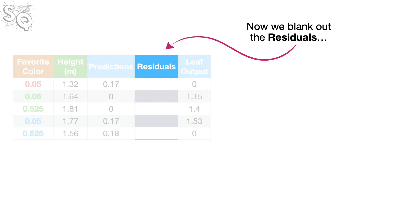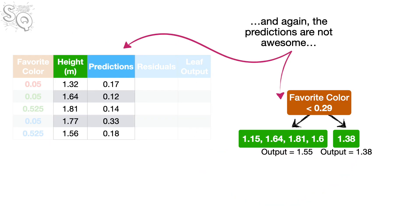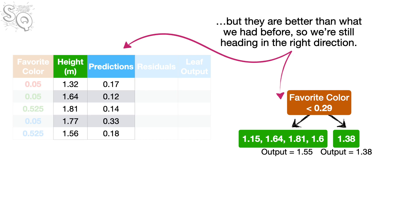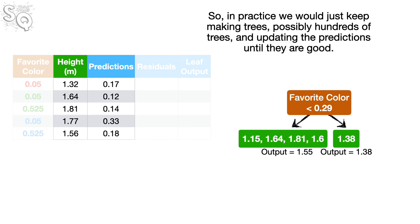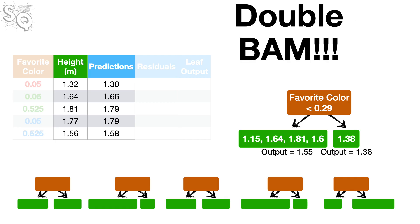Now, we blank out the residuals, and update the predictions. And again, the predictions are not awesome, but they are better than what we had before. So, we're still heading in the right direction. So, in practice, we would just keep making trees, possibly hundreds of trees, and updating the predictions until they are good. Double bam.